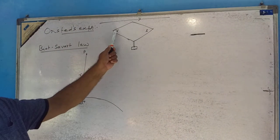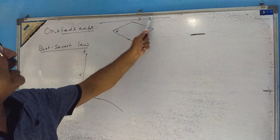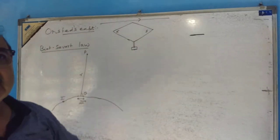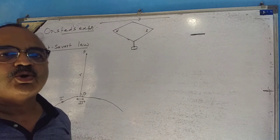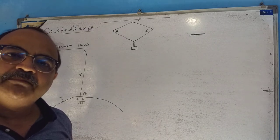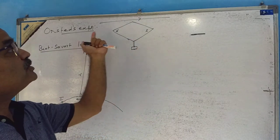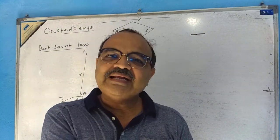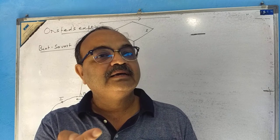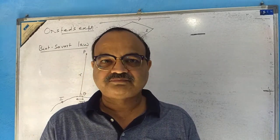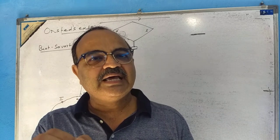In Orsted's experiment, there is a magnetic needle — I think all of you are aware of this. Just above the magnetic needle, there is a current-carrying conductor. You know that a magnetic needle is always deflected by a magnet. But surprisingly, here the magnetic needle gets deflected due to this current-carrying conductor. It means the current-carrying conductor is behaving as a magnet — it has a magnetic field.